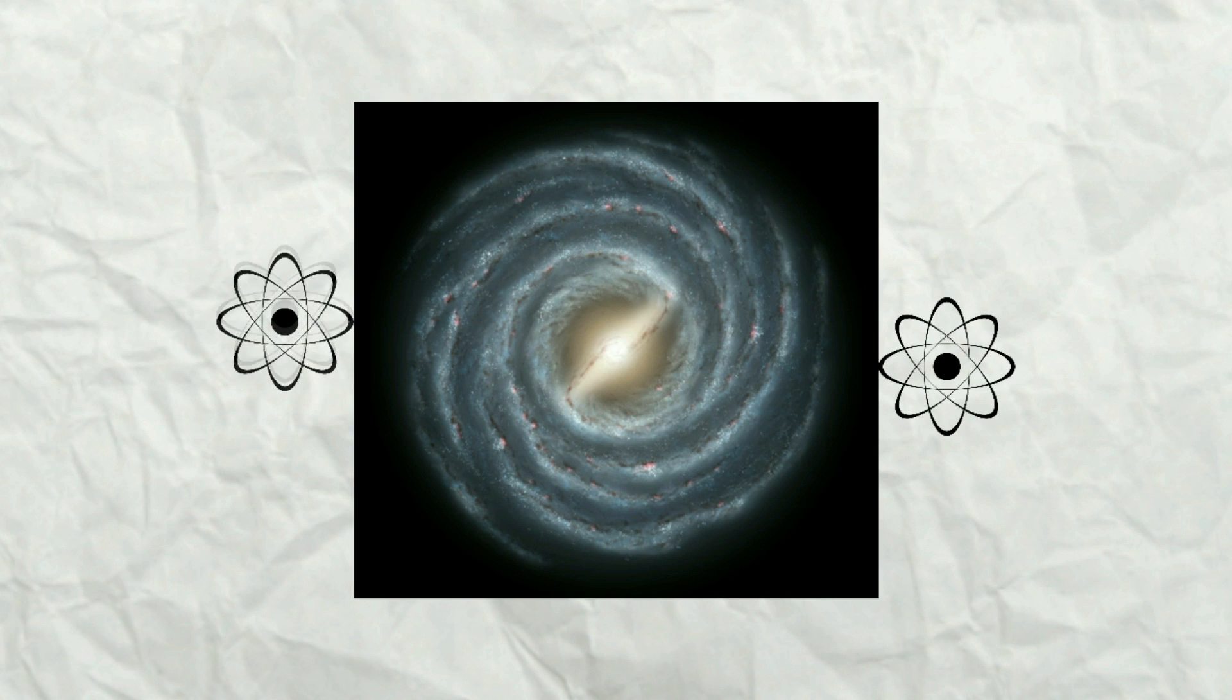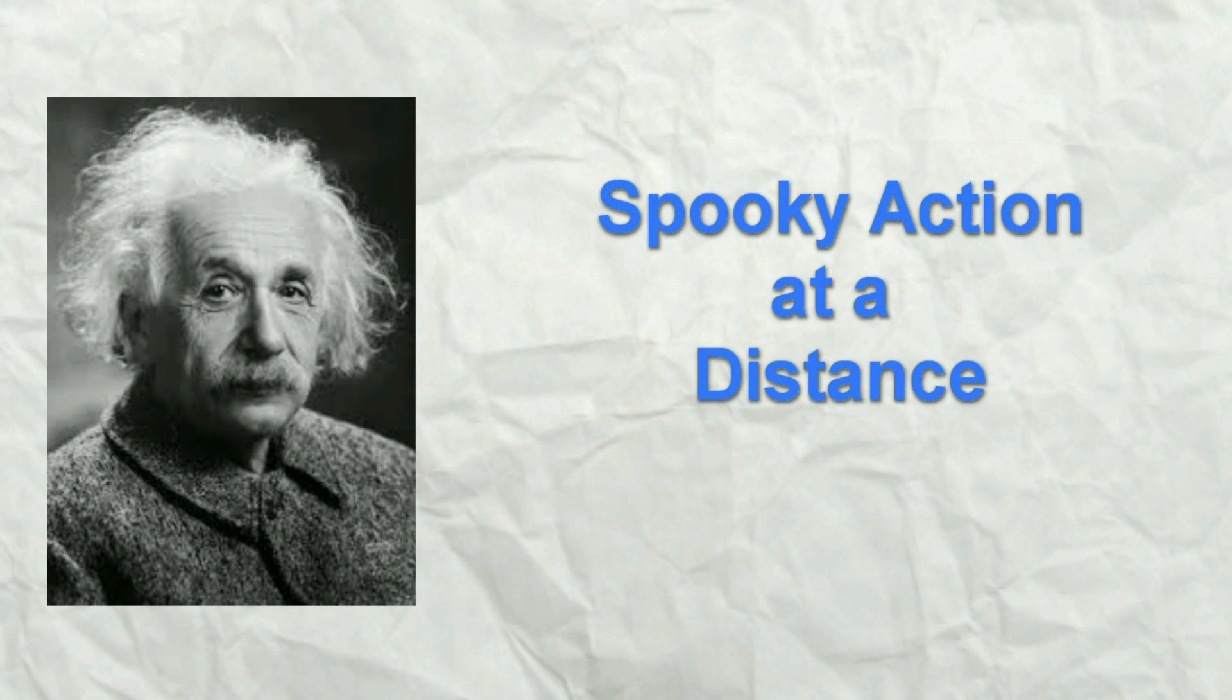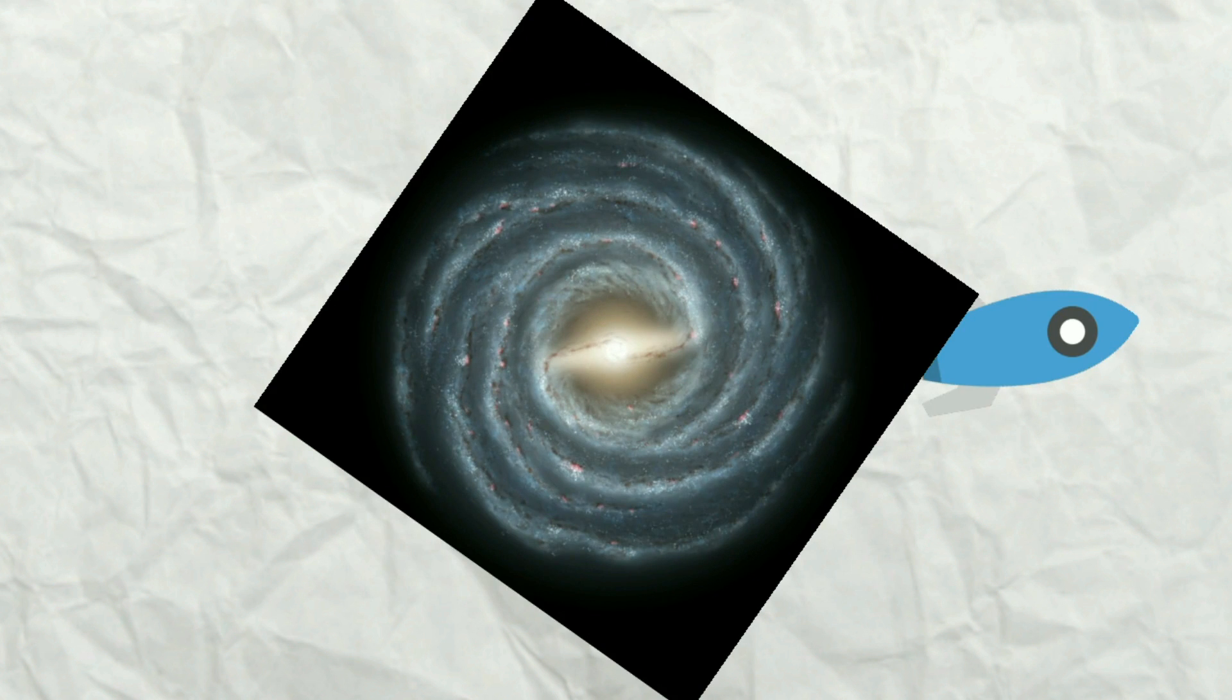For example, if two quantum entangled particles are set aside at the two ends of the Milky Way galaxy and if one particle was made to vibrate, the other one will vibrate at the same time. Albert Einstein defined this as 'spooky action at a distance.' So in quantum travel, the spaceship would enter a quantum state and pop out at the destination point without any loss of time, just like teleportation.